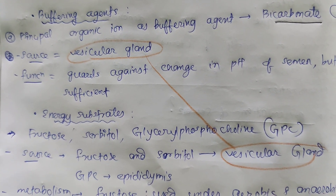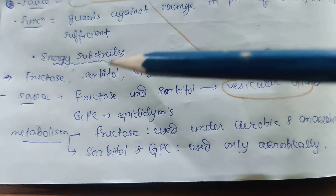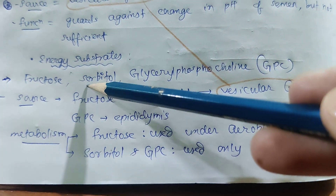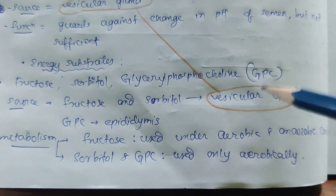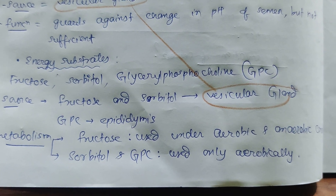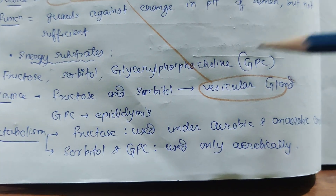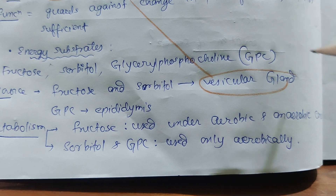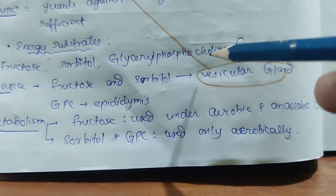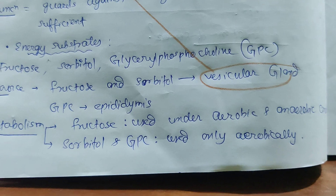The next is energy substrates. These contain fructose, sorbitol, and GPC — remember GPC, as the full name is difficult: GPC stands for glyceryl phosphocholine.